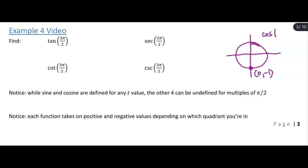Which means we can say cosine of 3 pi over 2 is equal to 0 because cosine is x value, and sine 3 pi over 2 is equal to negative 1 because sine is our y value.